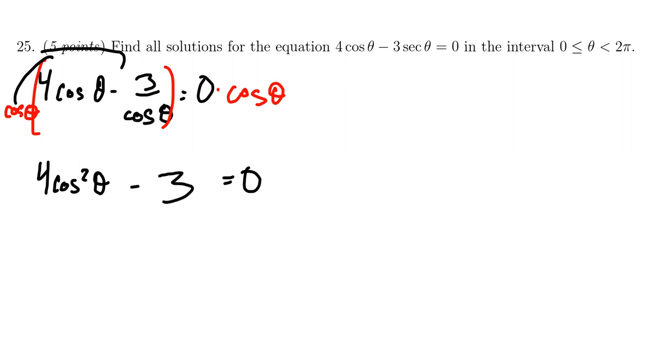Solving for cosine, we're going to add 3 to both sides. This gives us 4 cosine squared theta equals 3. Divide both sides by 4. So we end up with cosine squared theta is equal to 3 fourths.